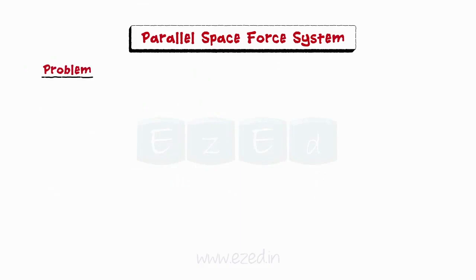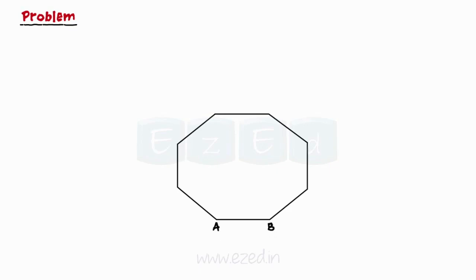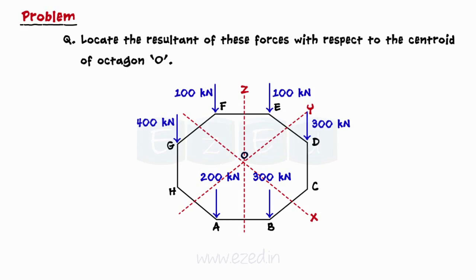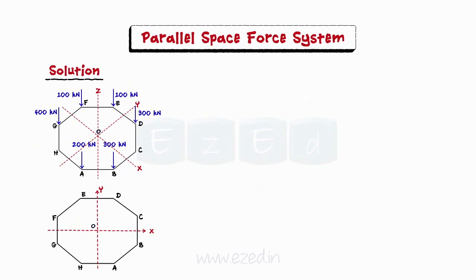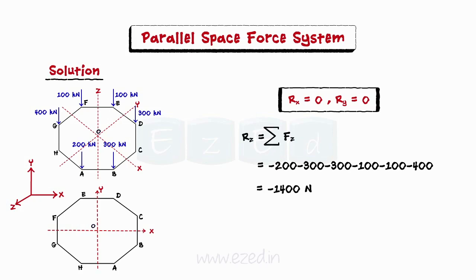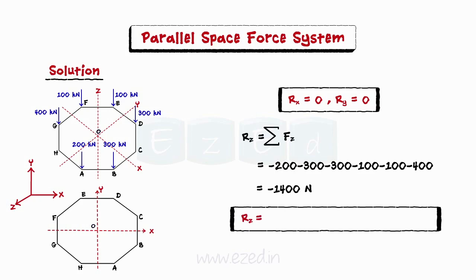Let us now consider this problem. The figure below shows a regular octagon A, B, C, D, E, F, G, H of side 3 meters. There are six columns which carry vertical forces normal to the plane of the octagon while acting at its six corner points. Locate the resultant of these forces with respect to the centroid of octagon O. Since all the forces are acting in the Z direction, the component of the resultant in the X and Y directions will be equal to zero. Hence, to find the resultant, we find the summation of all forces in the Z direction. On simplifying, we find it to be minus 1400 Newtons. The resultant has a magnitude of 1400 Newtons and acts in the negative Z direction.